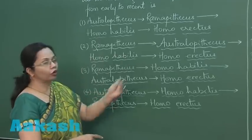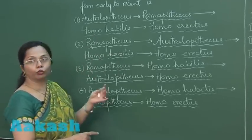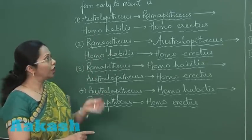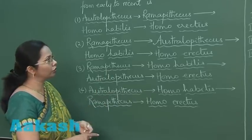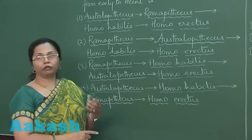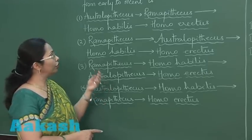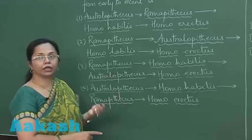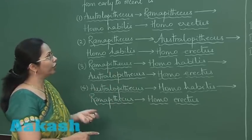The four hominids given here are Ramapithecus, Australopithecus, Homo habilis, and Homo erectus. Ramapithecus is the oldest, existing around 15 million years ago. Australopithecus between 4 to 2 million years ago, and around 2 million years ago there was Homo habilis. Finally coming later, around 1.5 million years, the Homo erectus.